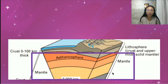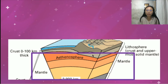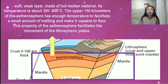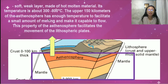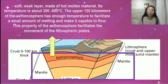In the picture, we have the mantle with its lower part and upper part. The upper part of the mantle includes the solid part and the asthenosphere. The asthenosphere is a soft, weak layer made of hot molten material. Its temperature is about 300 to 800 degrees Celsius. The upper 150 kilometers of the asthenosphere has enough temperature to facilitate a small amount of melting and make it capable to flow.